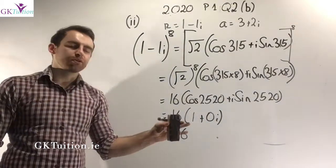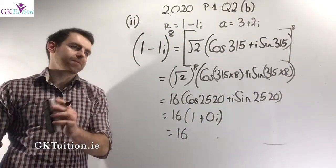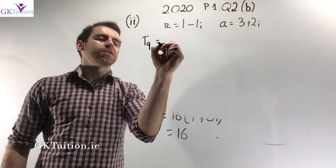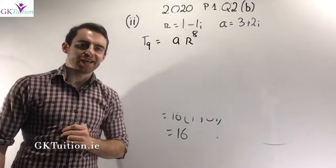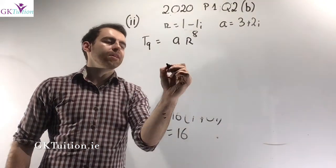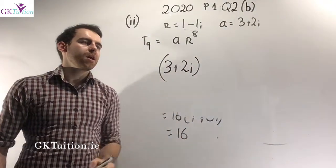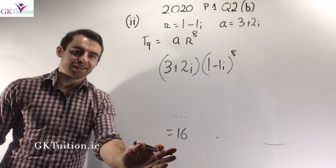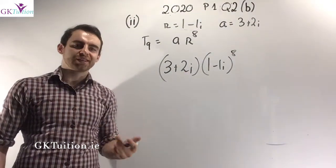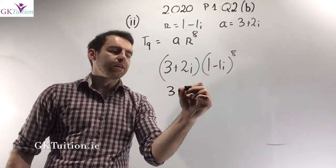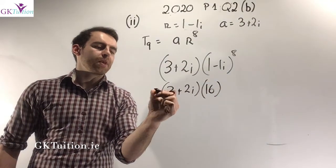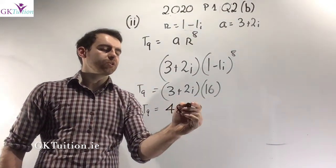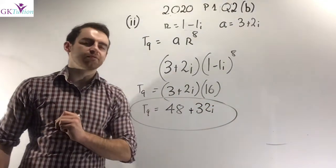I've used De Moivre's theorem to deduce that 1 minus i multiplied by itself 8 times is 16. Now switching back to sequences and series: the ninth term is A times r to the power of 8. A is 3 plus 2i, and r to the power of 8 is 16. So the ninth term is simply 3 plus 2i multiplied by 16. 16 times 3 is 48, and 16 times 2i is 32i. The final answer for part B(ii) is 48 plus 32i.